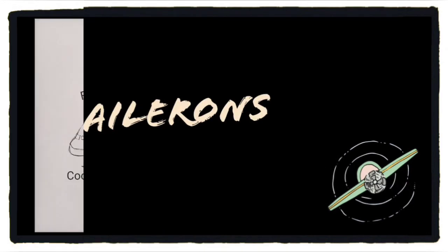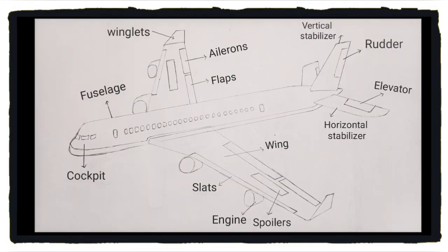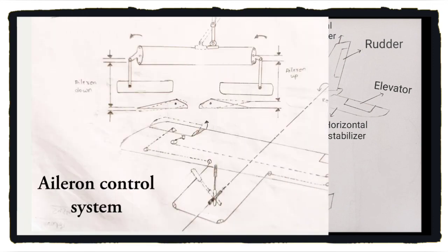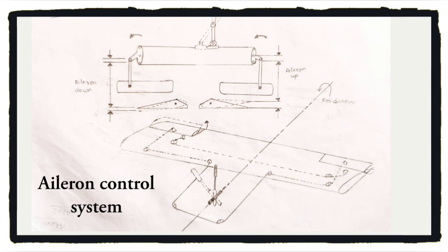Ailerons are located at the trailing edge of the wings and help to move the aircraft around the longitudinal axis, i.e. rolling. They have a dual function — if one operates down, the other goes up. They are operated with the help of a control stick located in the cockpit.